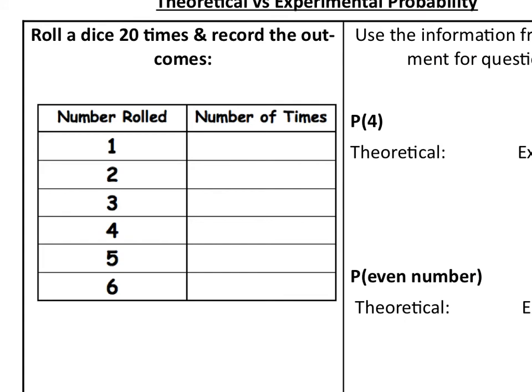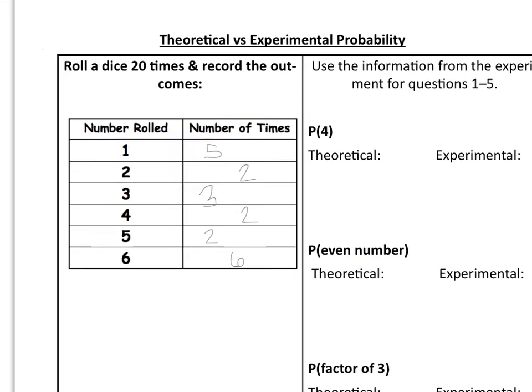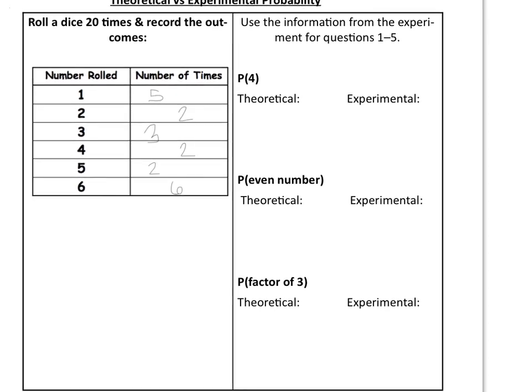Now we're going to conduct an experiment. I took a number cube and rolled it twenty times. I got the number one five times, number two two times, number three three times, number four two times, number five two times, and number six six times. We can use this information to compare theoretical and experimental probabilities in three different situations.